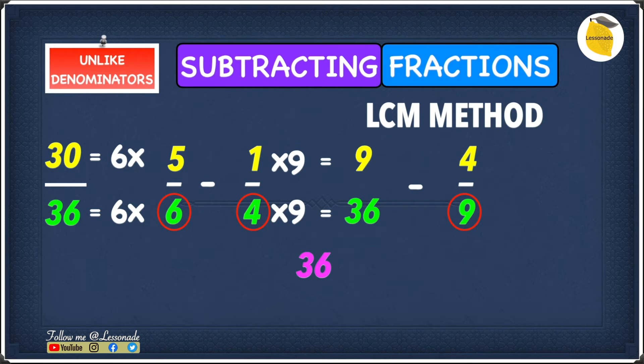Now we can move to 4 over 9. 9 goes into 36 four times, so 9 times 4 is 36. This means we have to multiply the top number also by 4. We know that 9 times 4 is 36 and 4 times 4 is 16, so this means 4 over 9 has now become 16 over 36.